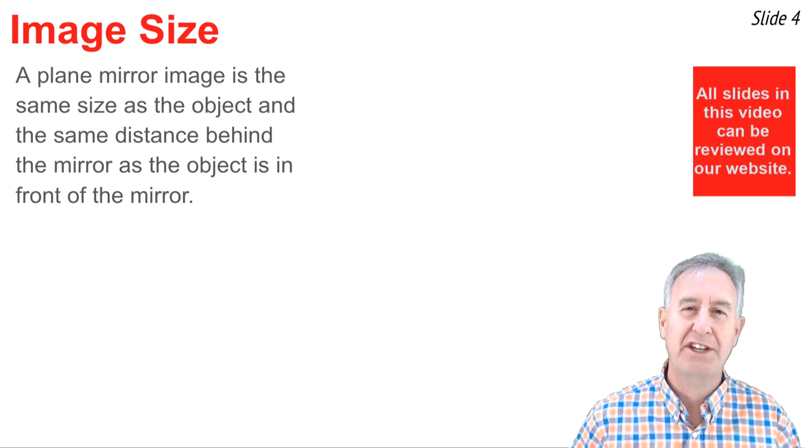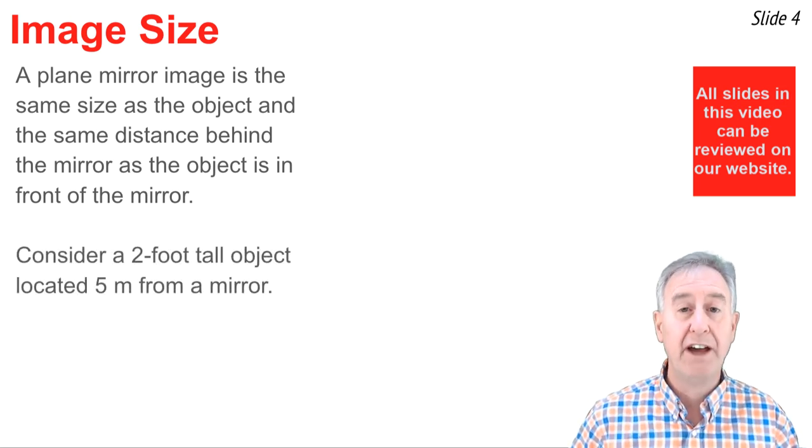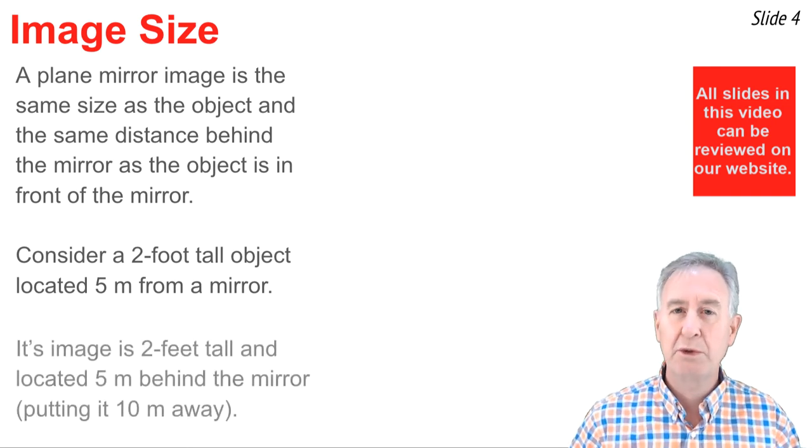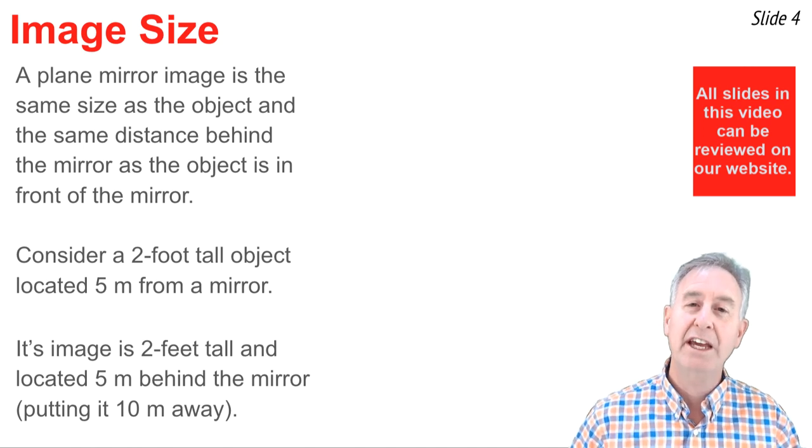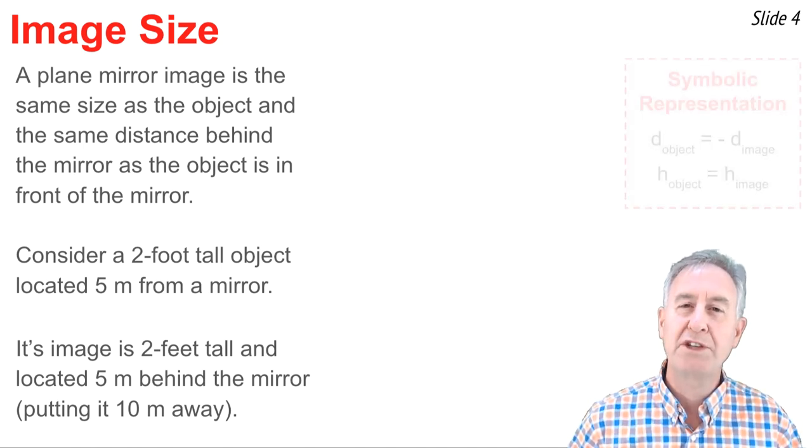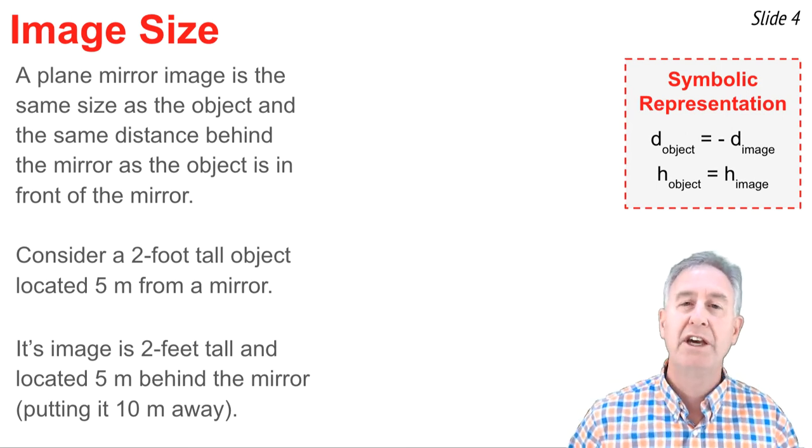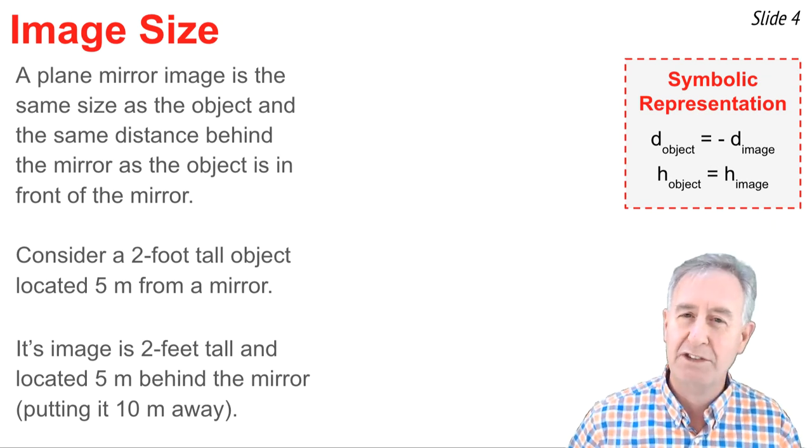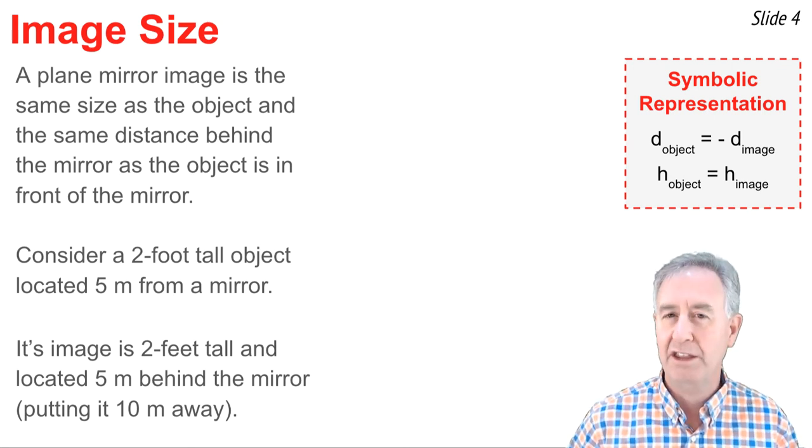The size of the image is exactly the same as the size of the object. Suppose we consider a 2-foot-tall object placed 5 meters from the mirror. If we looked at the image, we would observe that it's 5 meters behind the mirror, placing it 10 meters from the object itself, and it's also 2 feet tall. If we wanted to represent this in terms of symbols, we might say that the D object equaled the negative of the D image. The negative is there because the object's on the positive side of the mirror, and the image is on the negative side of the mirror. We could also write that the H of the object, the height of the object, equaled the height of the image.